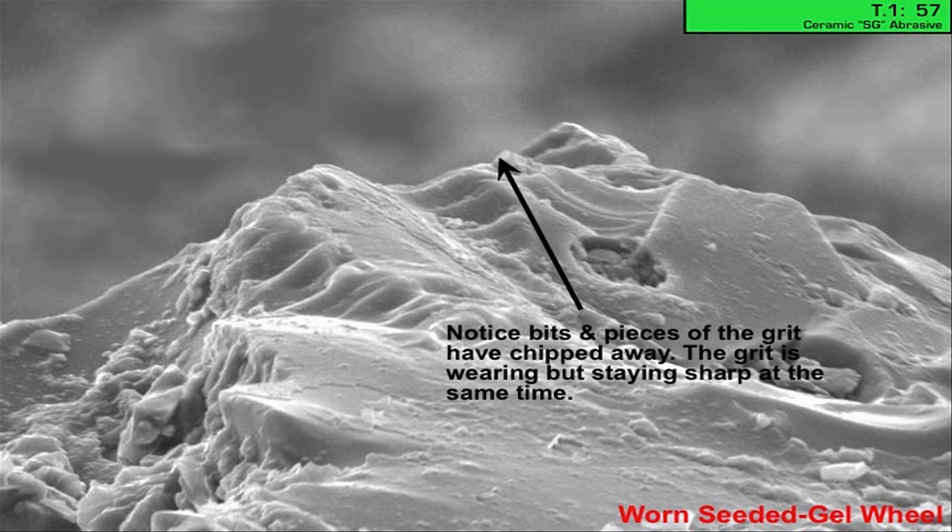Norton SG grits, also called ceramic grit, sometimes referred to as sol gel, seeded gel, SG, micro fracturing—a lot of different names people call this.